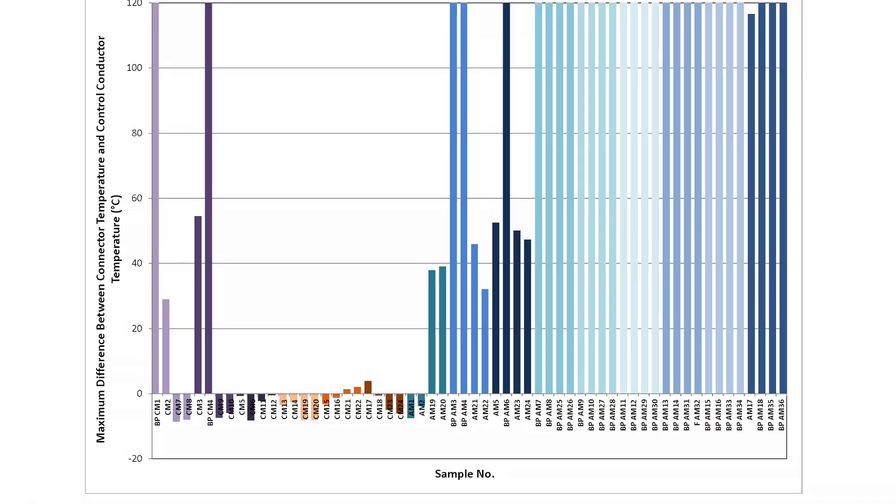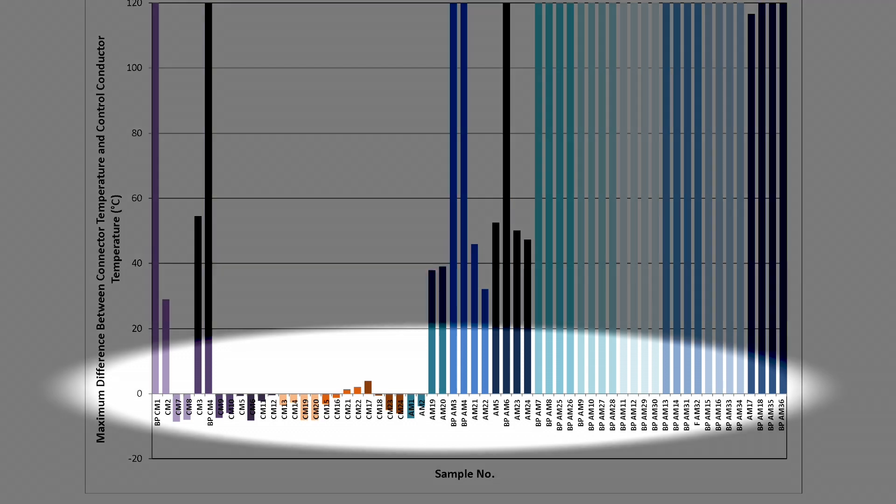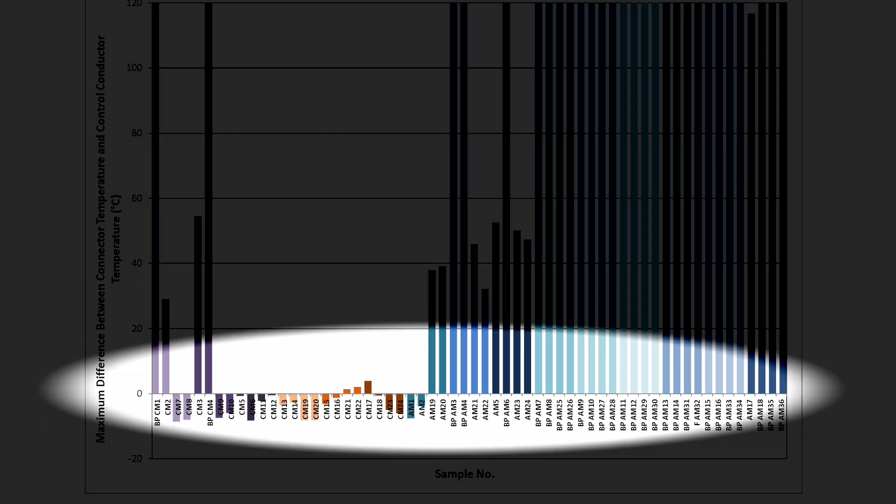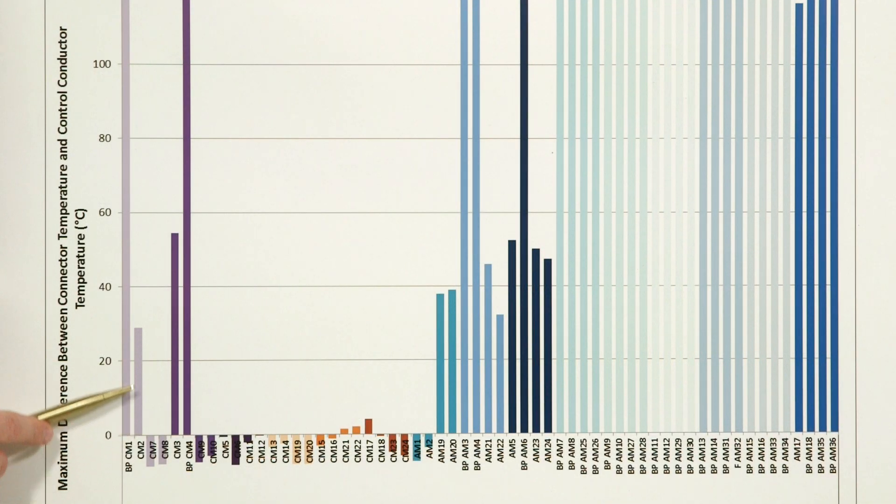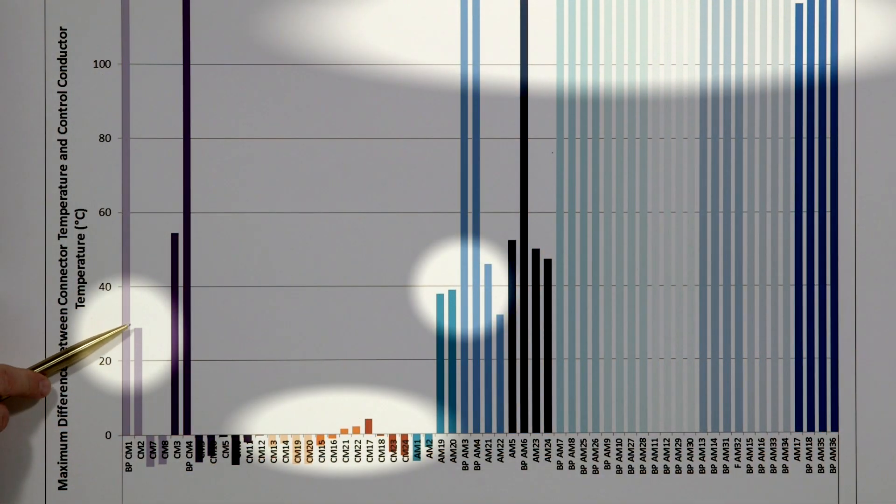This chart shows an evaluation of the temperature after a thousand cycles using the method from the IEC standard. The height of each bar is the maximum temperature difference between the sample and the control conductor throughout the test. A temperature difference greater than zero is considered a failure according to IEC.